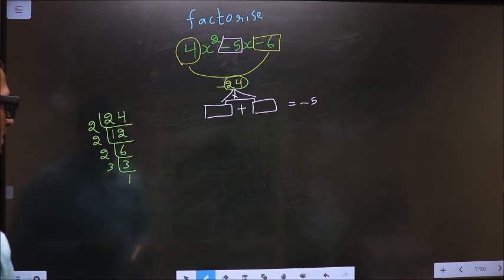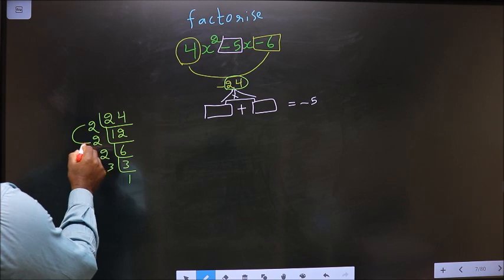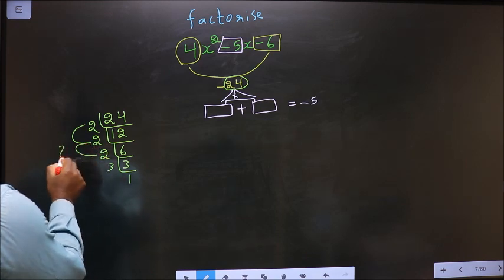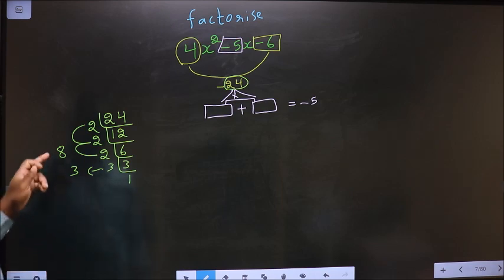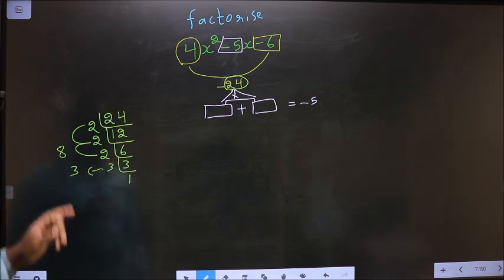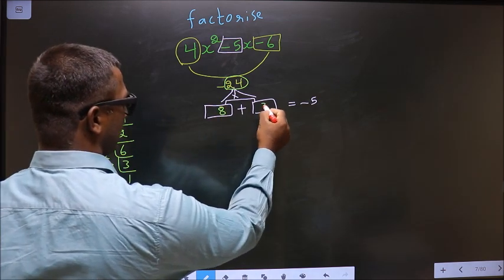So now, the two numbers should be 2 into 2 is 4, 4 into 2 is 8, and 3. 8 minus 3 is 5, 8 into 3 is 24. So the two numbers are 8 and 3.